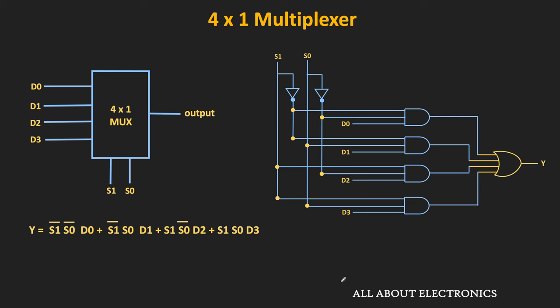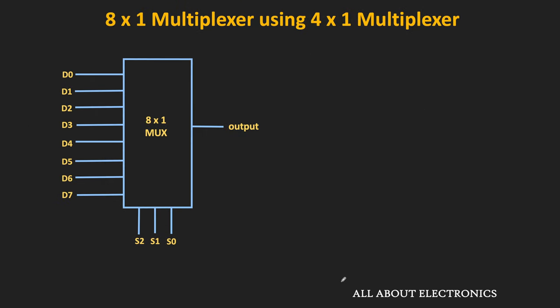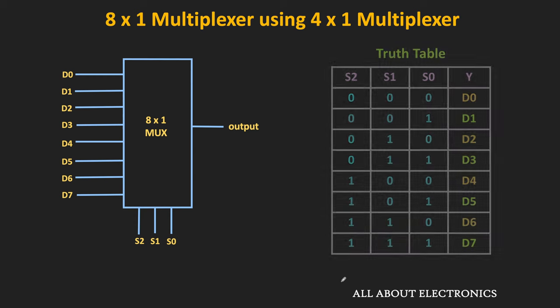This is the logic circuit of the 4-to-1 multiplexer. In the algebraic expression, we have 4 product terms, so we require 4 AND gates. Since each product term contains 3 variables, each AND gate requires 3 inputs. Using a 4-input OR gate, all the product terms can be logically ORed. Likewise, we can also design the 8-to-1 multiplexer, which has 8 inputs, 1 output, and 3 selection lines. This is the truth table of the 8-to-1 multiplexer.